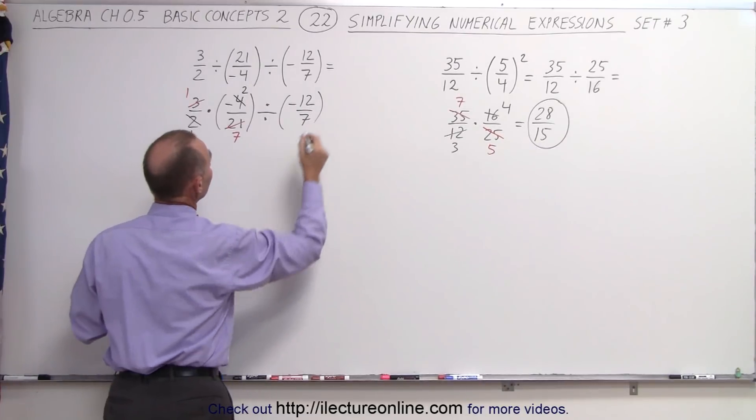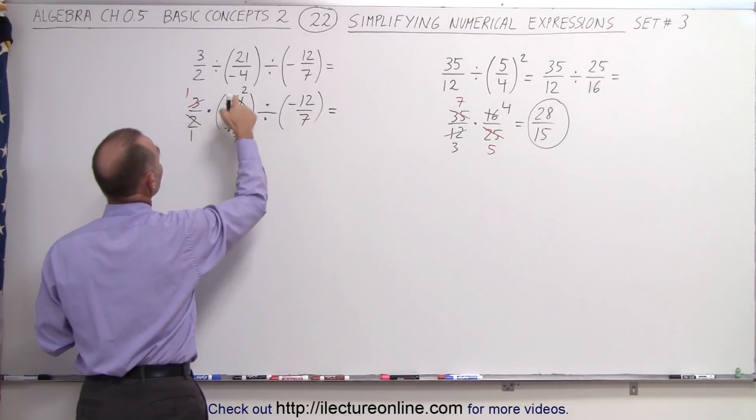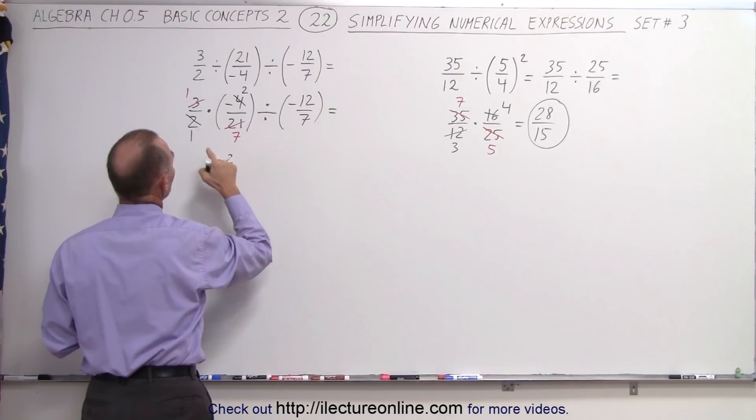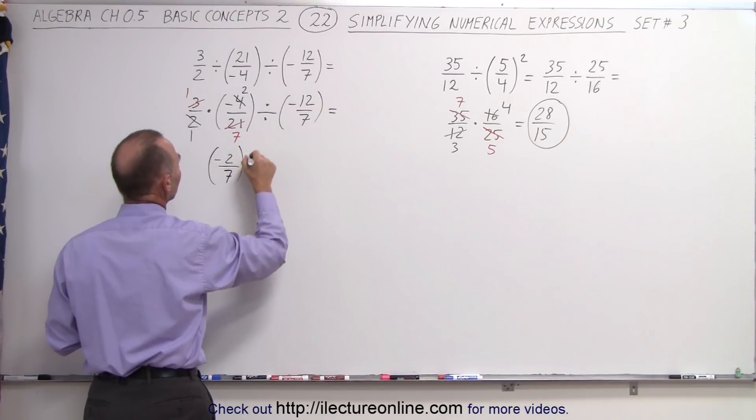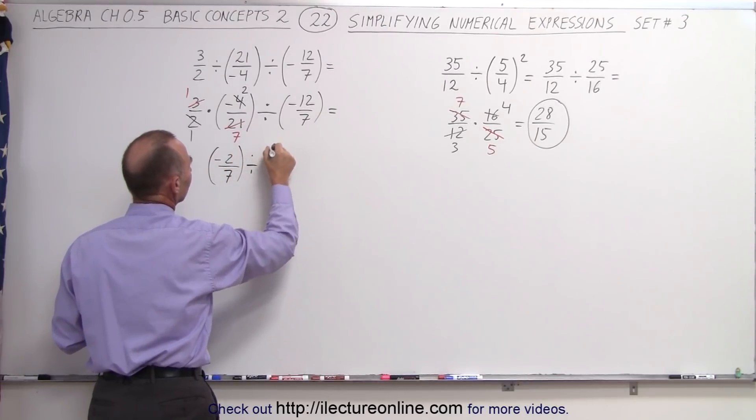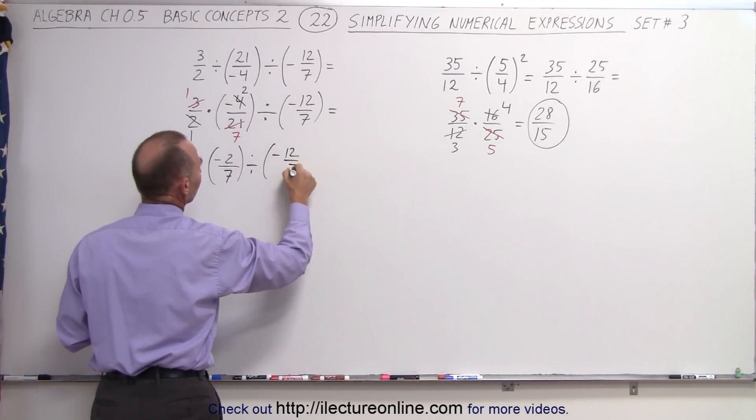And now we can simplify that. So we have 1 times a negative 2 is a negative 2, divided by 1 times 7 is 7. So we have a negative 2 over 7, and that is now divided by negative 12 over 7.